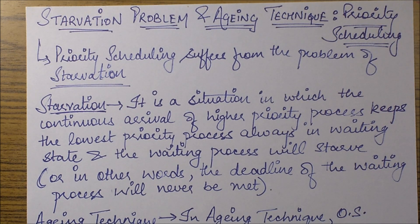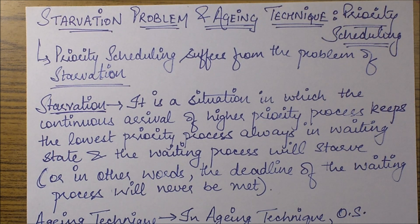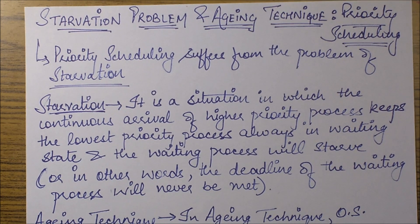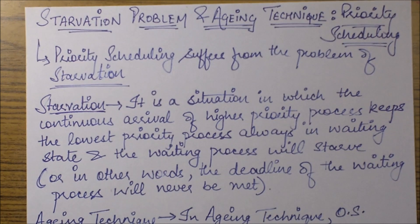This is the starvation problem. Since we know that a higher priority process is always given the authority to preempt the lower priority processes, in this manner the lower priority processes may starve.